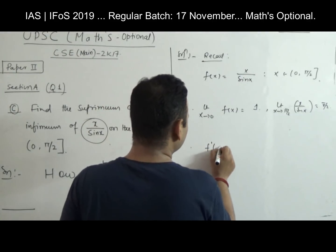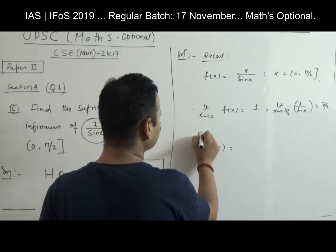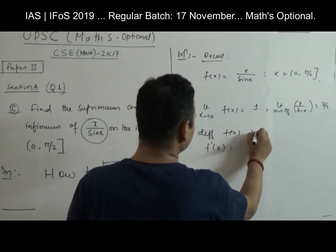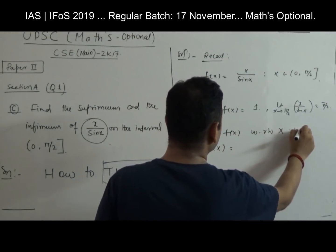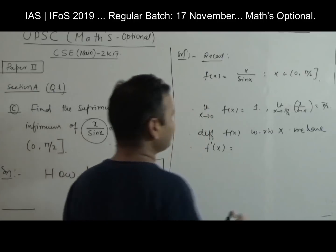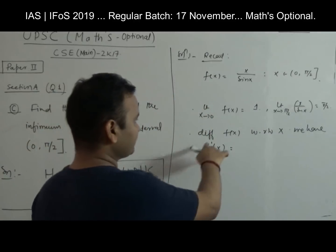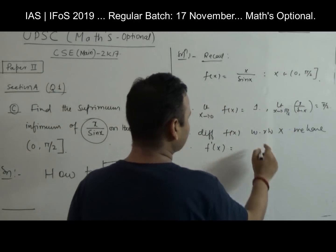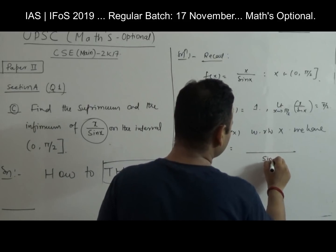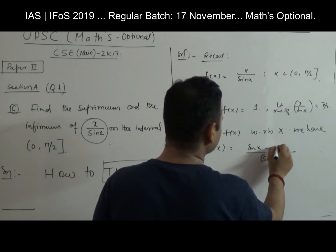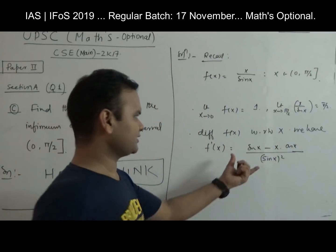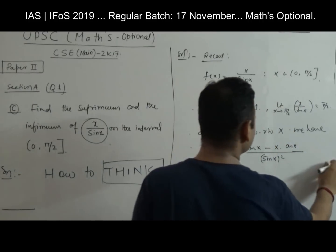Let's compute f′(x). Differentiating f(x) = x/sin(x) with respect to x, we get f′(x) = [sin(x) − x·cos(x)] / sin²(x). We can easily show this numerator is positive for all x in (0, π/2).